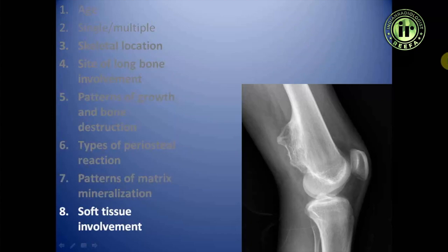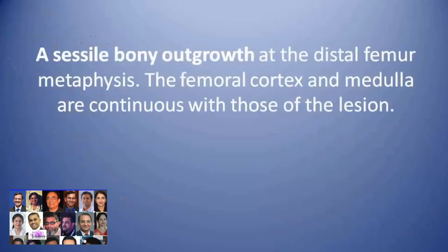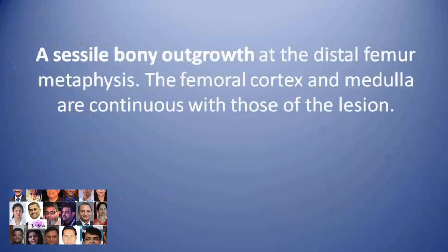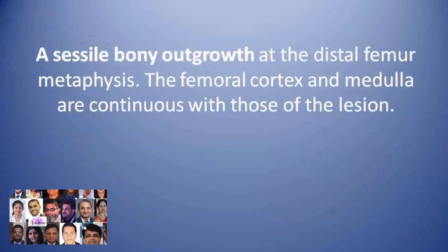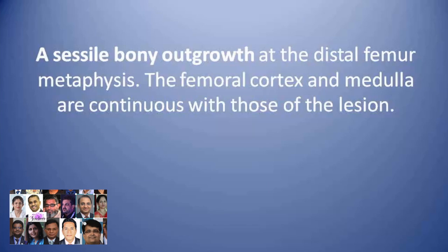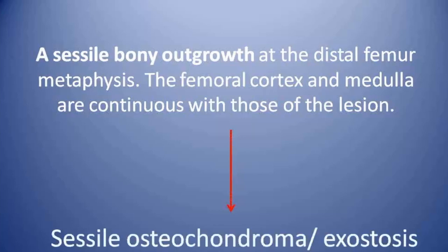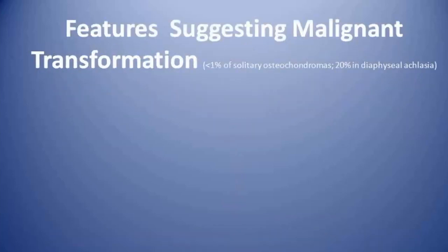There is no obvious matrix mineralization, and the lesion can impinge on the adjacent soft tissue. This is the case of a sessile bony outgrowth at the distal femur metaphysis. The femoral cortex and medulla are continuous with those of the lesion.